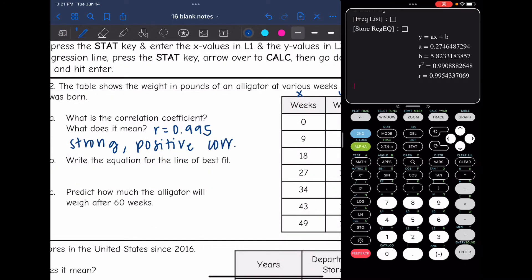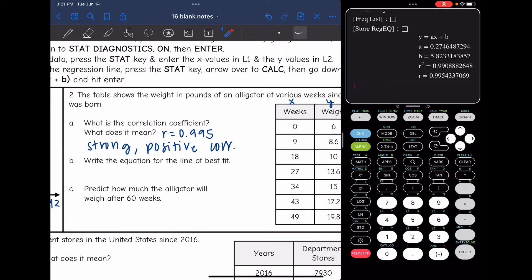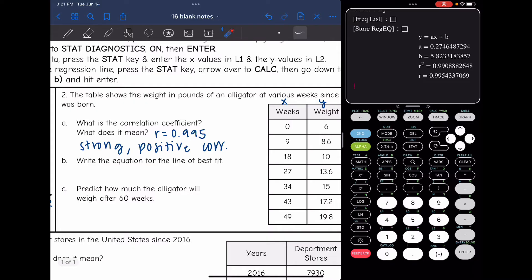Next we are going to write the equation for the line of best fit. And since my r value was very close to 1, I know that this is going to be a pretty accurate line of best fit. On my calculator, it told me a and b, which are the slope and the y-intercept. So the equation for the line of best fit would be y equals, I'm just going to round to the hundredths, 0.27x and then plus 5.82 for the y-intercept.